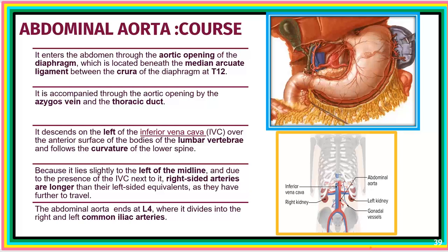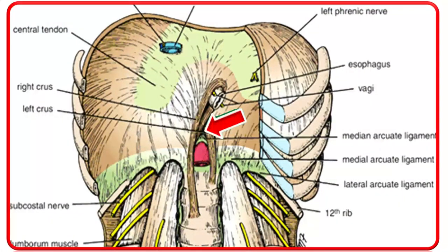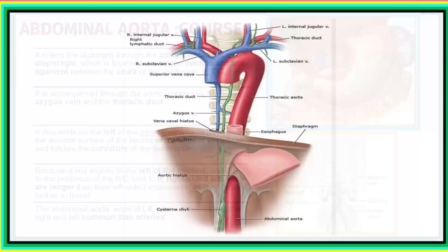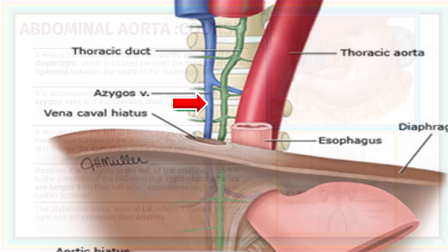The aorta enters the abdomen by piercing through the thoracic diaphragm through the aortic opening at the level of the T12 vertebra. This opening is seen below the median arcuate ligament, which lies between the right and left crura of the diaphragm. As it passes through the aortic opening, it travels with two other major structures: the azygous vein and the thoracic duct.